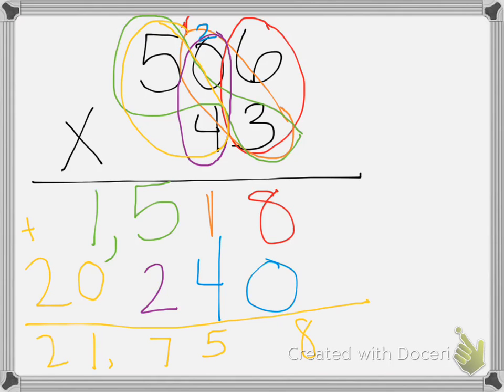Again, you can do partial products, you can do the area model, you can do the lattice. Let's practice a 3-digit. So if we had a 3-digit, let's say it was 457 times 309.